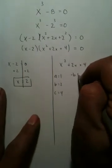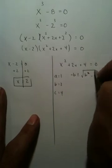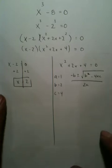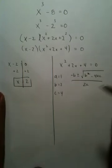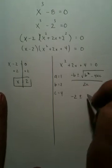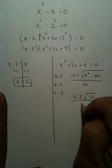negative b plus or minus b squared minus 4ac all over 2a is the quadratic formula. After you substitute everything in, you're going to get negative 2 plus or minus negative radical 12 all over 2.